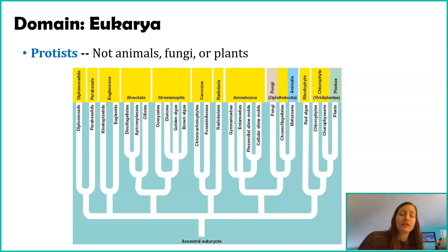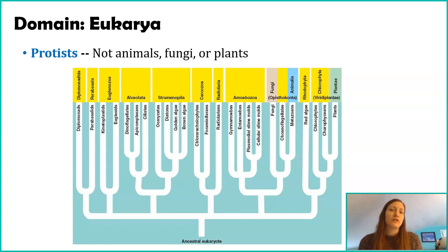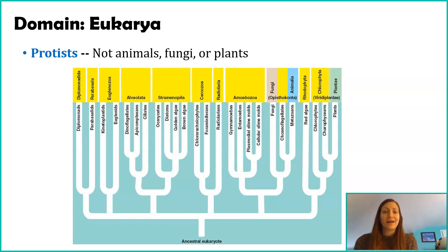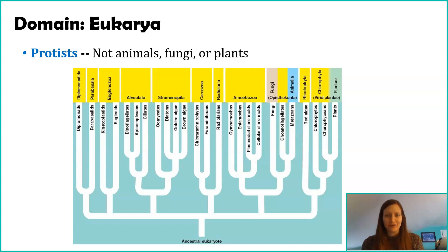Some of them are unicellular, some are multicellular. Some of them move, some don't. Some of them can create their own energy, and some have to consume other things to get energy. There is no unifying characteristic that ties a protist together. So scientists just say they're not plants, fungi, or animals — they are everything else.